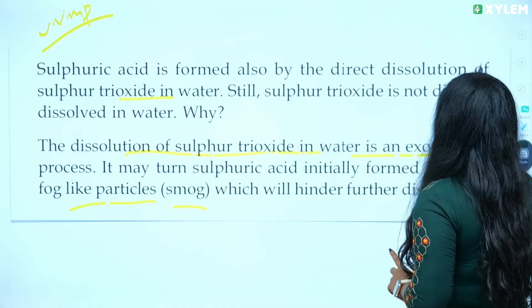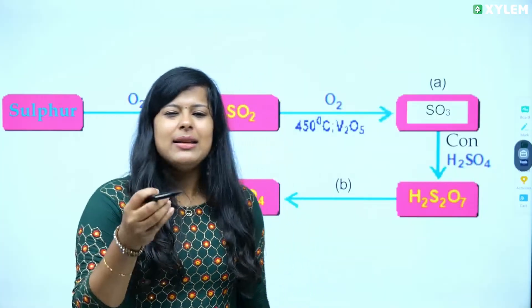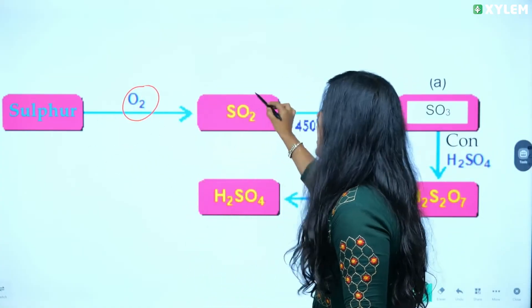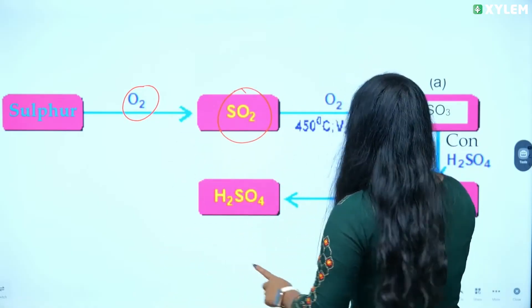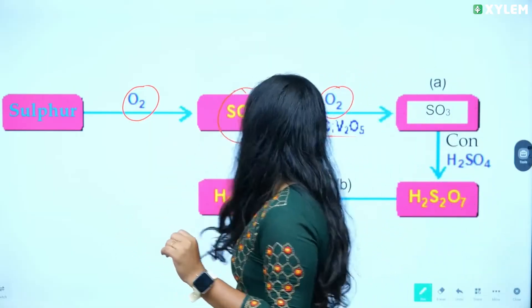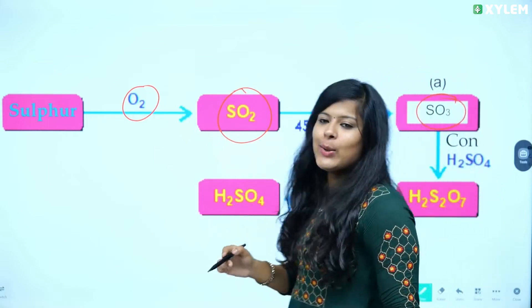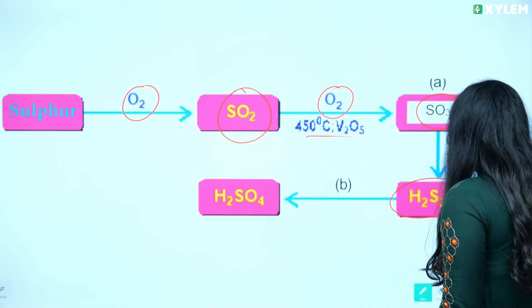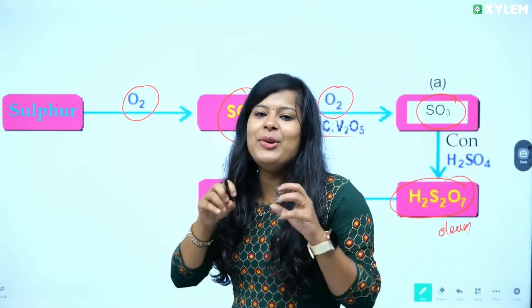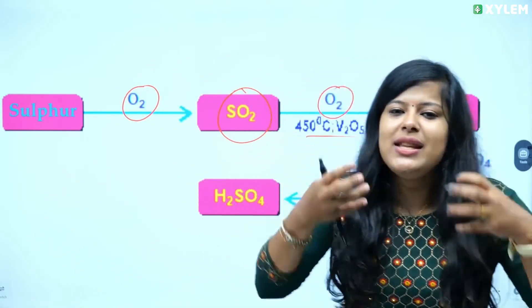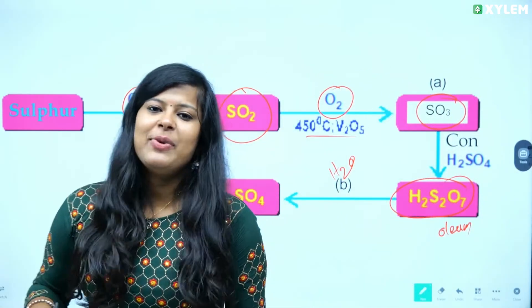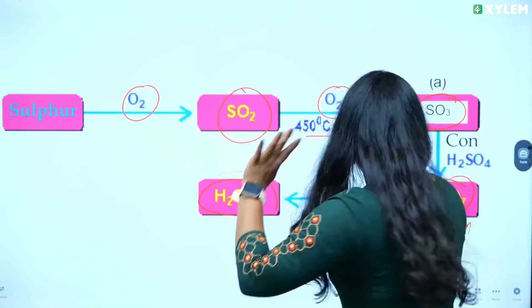That is why we do not dissolve SO3 directly in water. We have a diagram: we have sulfur here, we have oxygen here — they react to give SO2. In the presence of V2O5 at 450 degrees Celsius, SO2 reacts with O2 to give SO3. SO3 reacts with H2SO4 to give H2S2O7, which is called Olium. Olium then reacts with H2O to give H2SO4. That is our Contact Process. That is very, very important. We have to study the Contact Process.